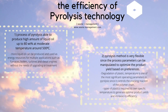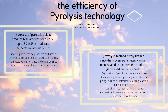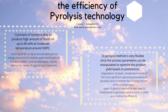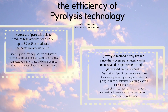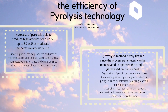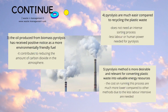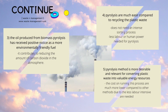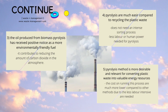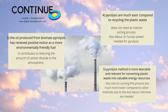The efficiency of pyrolysis technology: 1. Pyrolysis can produce a high amount of liquid oil, up to 80%, at moderate temperature around 500 Celsius. 2. Pyrolysis is very flexible since the process parameters can be manipulated to optimize product yield. 3. Oil produced from biomass pyrolysis is considered more environmentally friendly fuel. 4. Pyrolysis is much easier compared to recycling plastic waste. 5. Pyrolysis is more desirable for converting plastic waste into valuable energy resources.